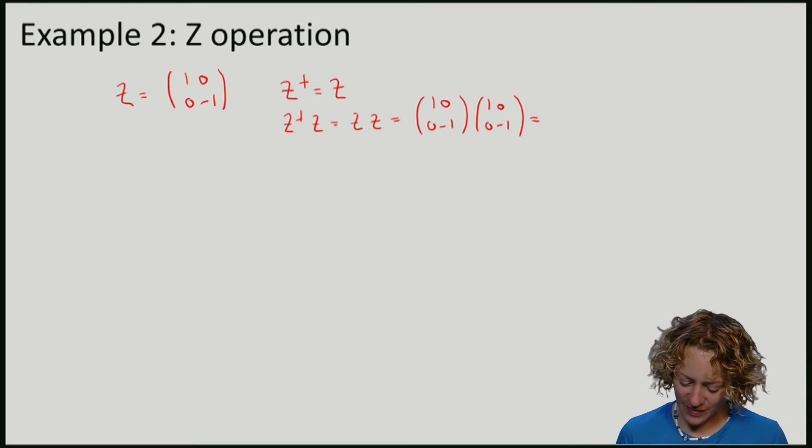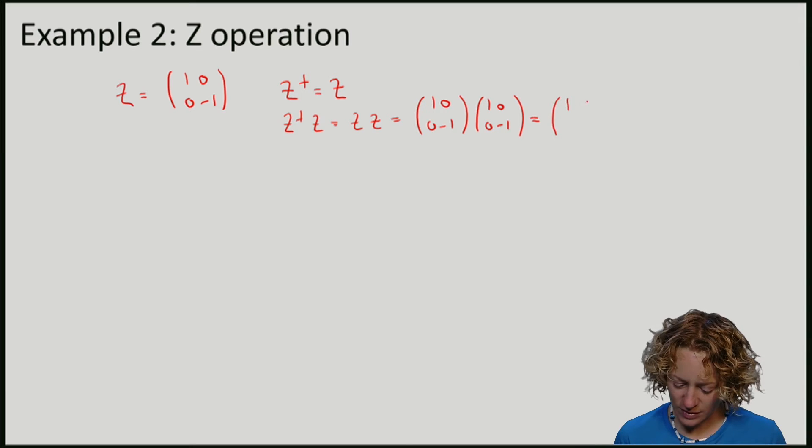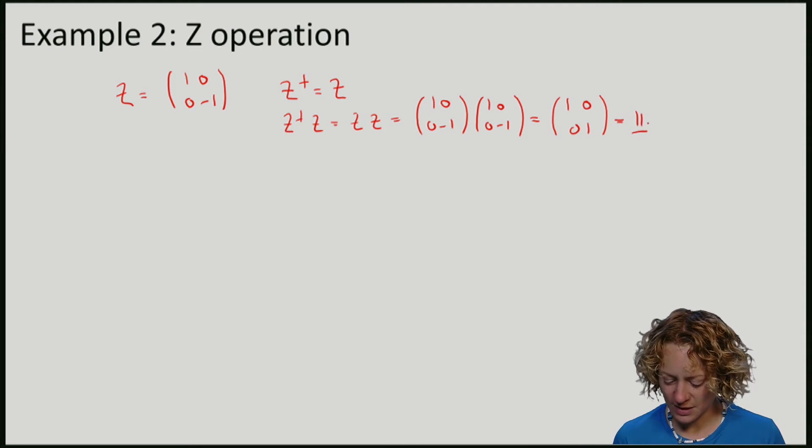And if I do that computation, we will find that this gives us 1, 0, 0, 1, which is just the identity matrix.